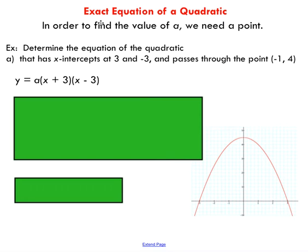What I want to do now is actually determine the exact equation of a quadratic. In order to do that, we need to be given a point in our problem. So it's not enough just to be given the x-intercepts, like this problem here. You can see I'm given the x-intercepts of three and negative three. I also need a point. The reason for that is if you take a peek at our expression here, I've already substituted in our x-intercepts, we do not have our a value.